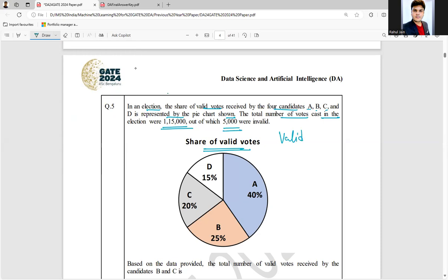So what are the valid votes? Total valid votes are 115,000 minus 5,000 invalid, so I am going to get 110,000. These are the total valid votes.